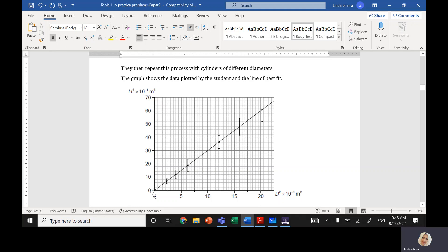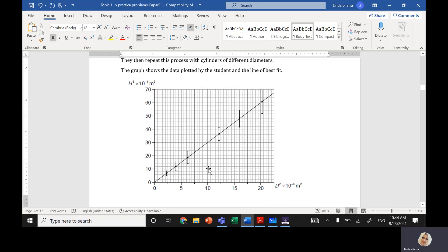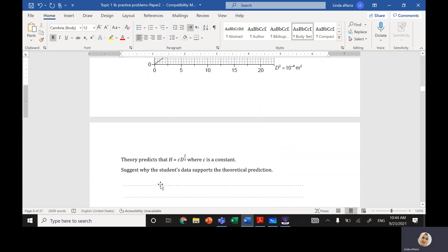The line passes through the origin. As you notice, we don't have error bars in the horizontal direction because all the cylinders have fixed diameter but different heights, so he has uncertainty in h, the height. Now the question says theory predicts that height equals constant times the diameter to the power two over three. Suggest why the student's data supports the theoretical prediction.